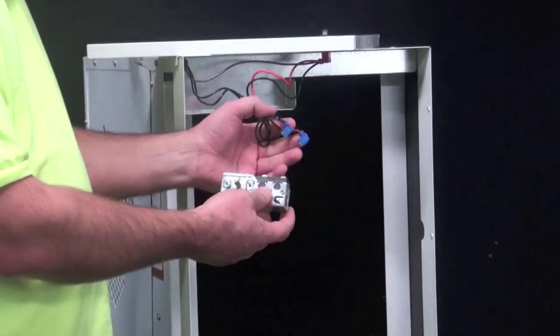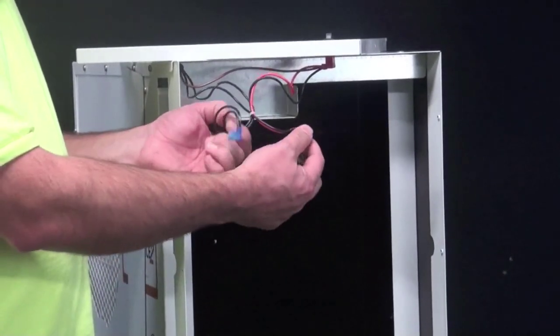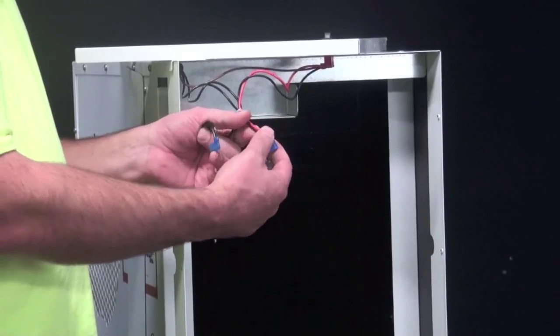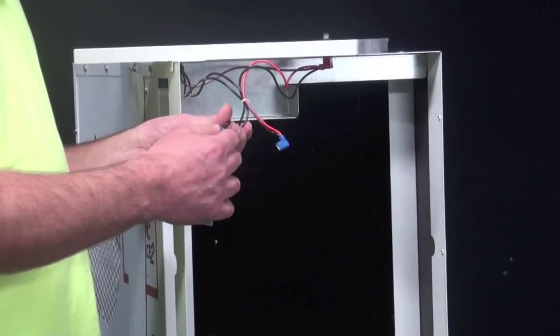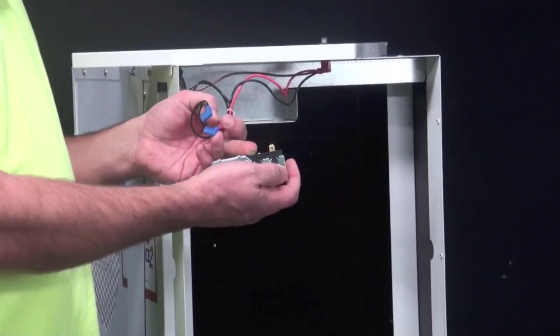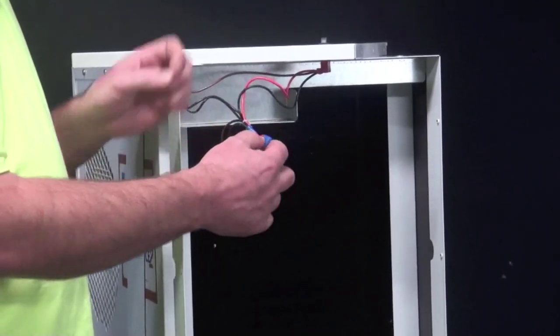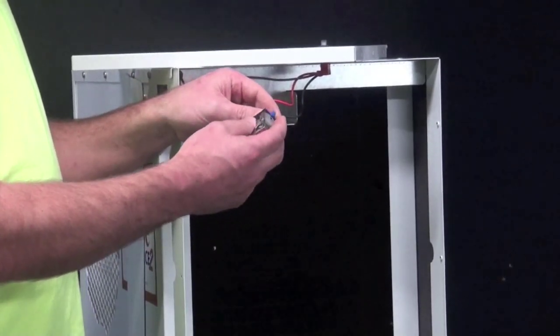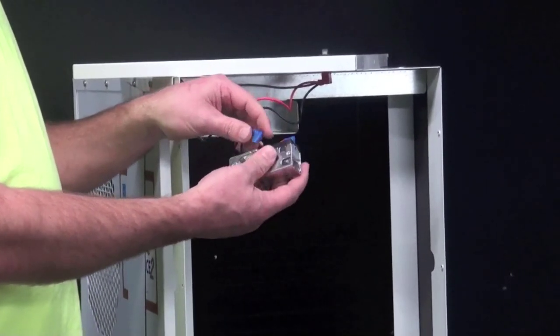And you're going to connect the two wire connectors. Now when you do this, you'll see there's an orange wire with a black wire on one terminal, or one connector, and the other one has two black wires. Now it doesn't matter what terminal you put each one on. They're interchangeable, so just go ahead and slide them on. Make sure you push them down all the way so they're not going to come off and so they're not loose.